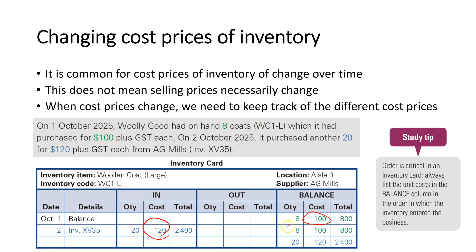They've now recorded in their balance that they still have eight of the $100 coats, but they also now have 20 of the $120 coats. Importantly, order is critical in the inventory card — you always list the unit costs in the balance column in the order in which they entered the business. So the earlier it entered, or the older the inventory, the more towards the top it goes in your balance section.